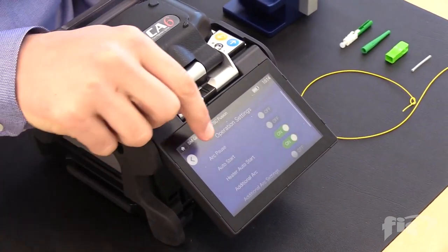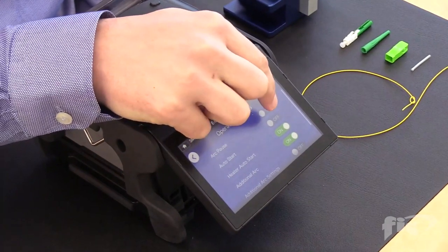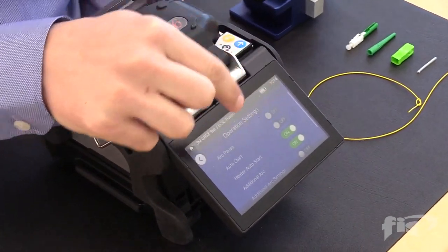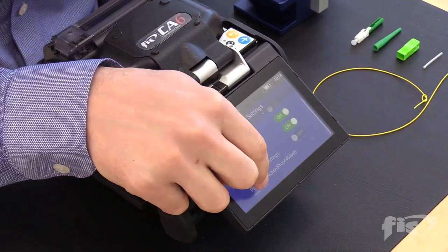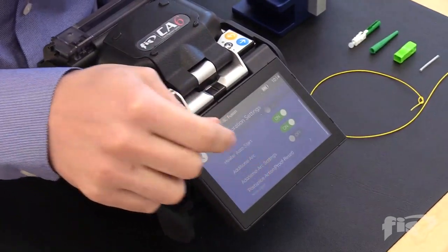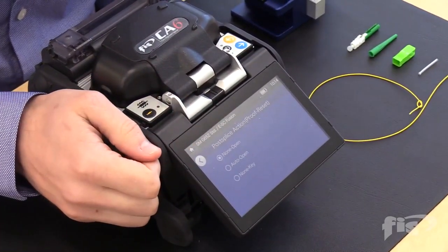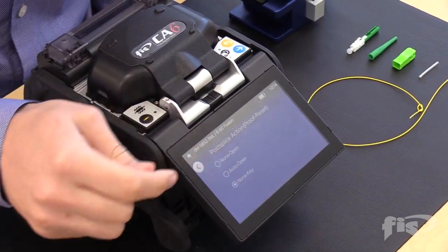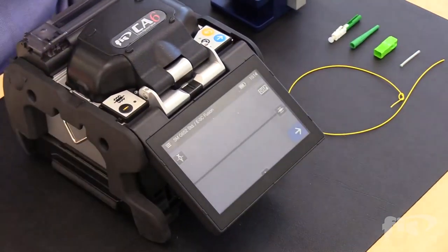Scroll down to post splice action or proof test, select it, and select none key. Click the menu icon to get back to the main screen.